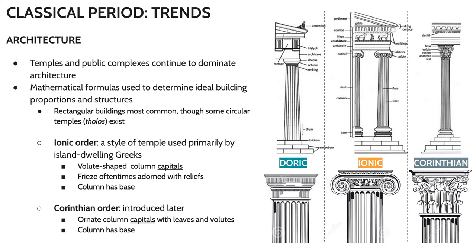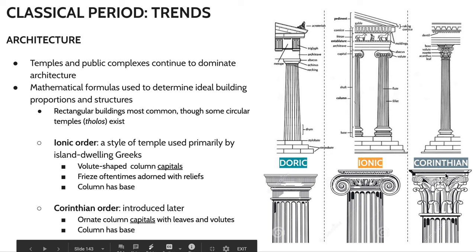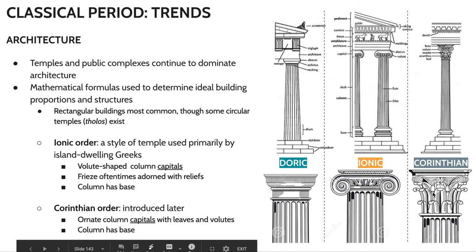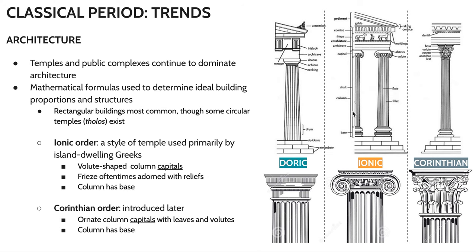In terms of architecture, we see the introduction of the Ionic and Corinthian orders. The Ionic order is quite recognizable — the column capitals have these double volutes, this kind of swirly design. Corinthian columns have these smaller volutes as well as leaves. So over time we're becoming a little bit more complex. Additionally, Ionic and Corinthian orders have bases on their columns. Temples and public complexes continue to dominate architecture into the Classical period, and we're seeing mathematical formulas used to determine ideal building proportions.